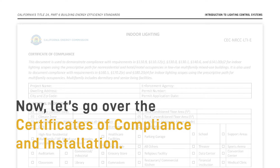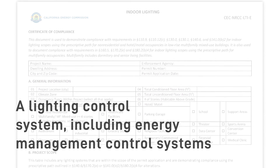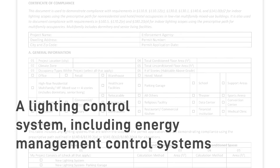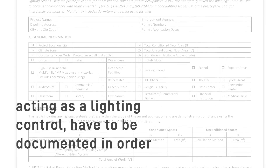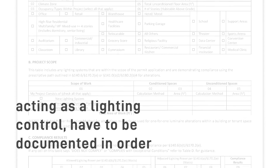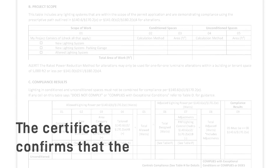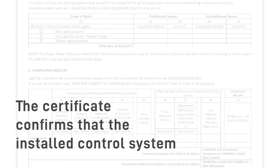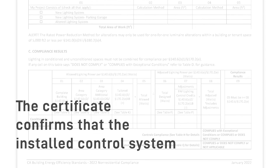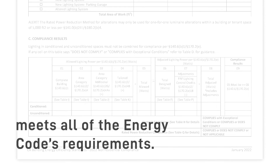Now let's go over the certificates of compliance and installation. A lighting control system, including energy management control systems acting as a lighting control, has to be documented in order to be recognized as compliant with the energy code. The certificate confirms that the installed control system meets all of the energy code's requirements.